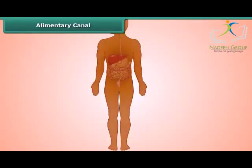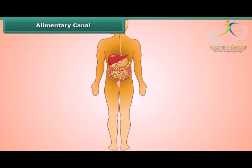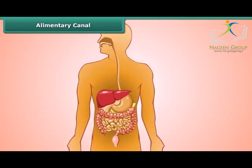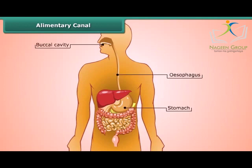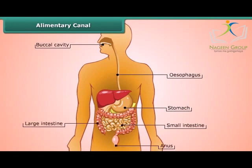You will be surprised to know that the food inside our body passes through an alimentary canal, or simply the digestive tract. It consists of the buccal cavity, food pipe or esophagus, stomach, small intestine, large intestine, and the anus. Now let us know what happens to the food in the different parts of the digestive tract.